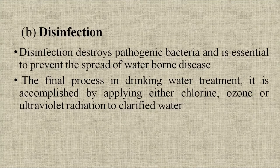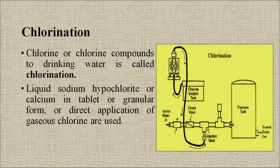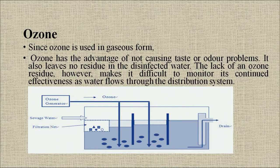Disinfection destroys pathogenic bacteria and is essential to prevent the spread of waterborne diseases. The final process in drinking water treatment is accomplished by applying either chlorine, ozone or ultraviolet radiation to clarified water. For chlorination, liquid sodium hypochlorite or calcium hypochlorite in tablet or granular form, or direct application of gaseous chlorine, are used. Since ozone is used in gaseous form, it has the advantage of not causing taste or odor problems and leaves no residue in the disinfected water. However, the lack of ozone residue makes it difficult to monitor its continued effectiveness as water flows through the distribution system.